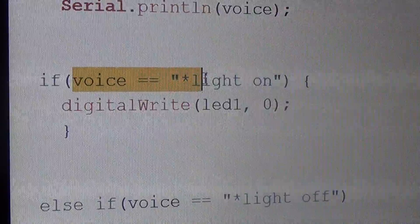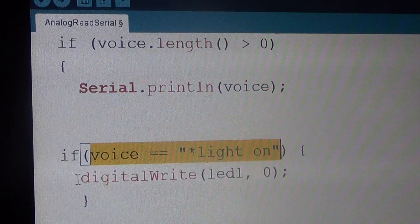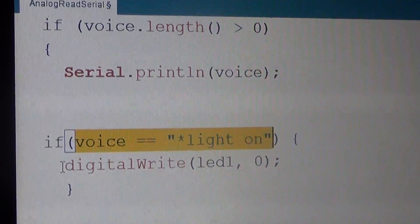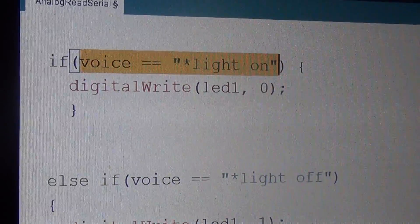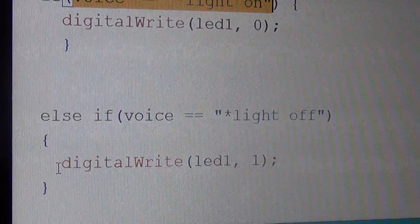If the voice received is light on, automatically Arduino is going to activate the relay. If light is off, it is going to turn off the relay. Here we are using zero trigger relay.